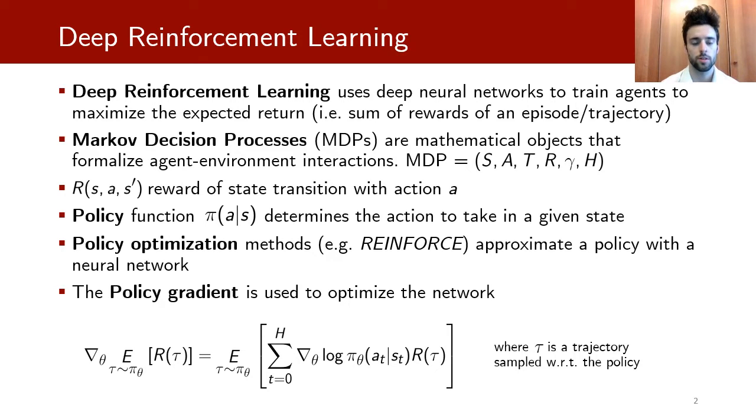The policy function π determines the action to take in a given state. The function π can be stochastic, so the choice of the action can be parameterized by a probability distribution. This is frequently the case in policy optimization methods, like REINFORCE. In this class of methods, the policy is directly approximated, often by a neural network, which is optimized through the computation of the policy gradient.